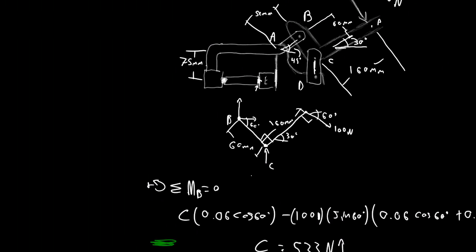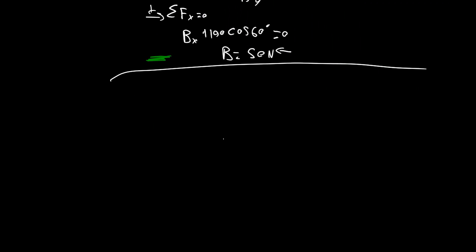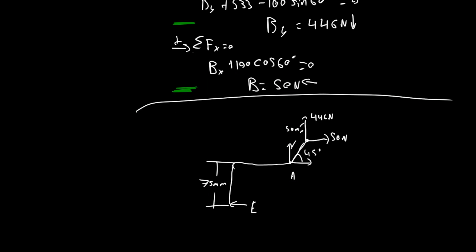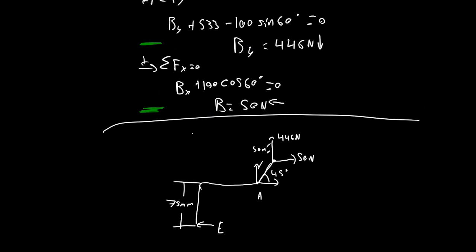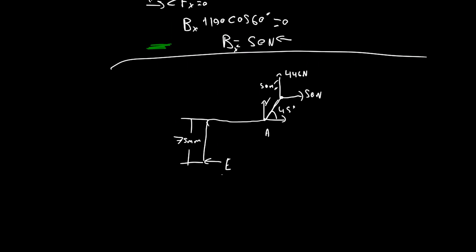Now we do member BAE. So, we got 446 newtons up. That's equal opposite reaction at B. And then we'll have A with two unknowns. We have force E. We have our BX here going this way at B because of equal and opposite reaction forces. We don't want to have to look for the forces in A. We'll just directly solve for the forces in E.